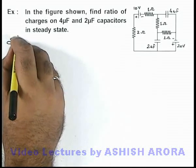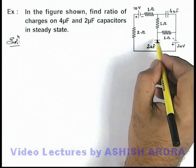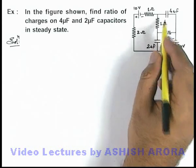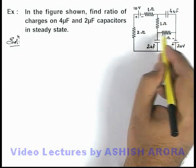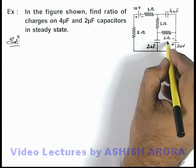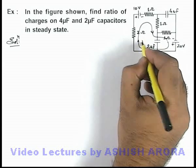Now we know that in case of steady state, no current will flow through the branches where capacitors are connected, so there won't be any current in this and this branch. So we can see there'll be a single loop available through which the current will flow, so here we can say this is the loop in which say a current i flows.